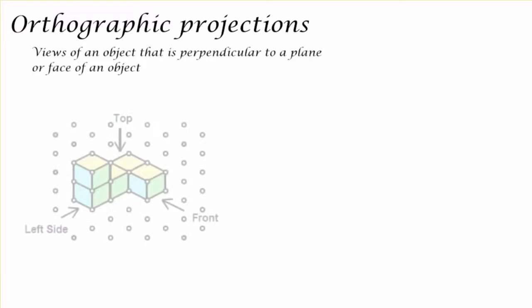So an orthographic projection is the view of an object that is perpendicular to a plane or face of an object.